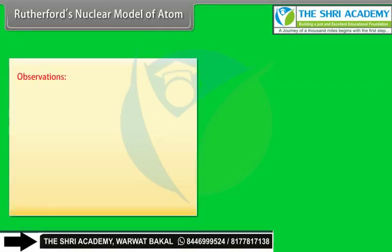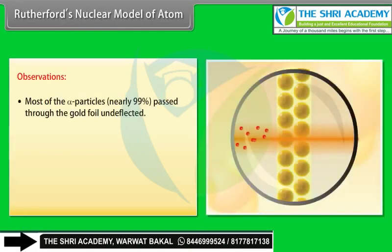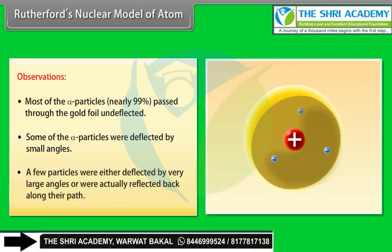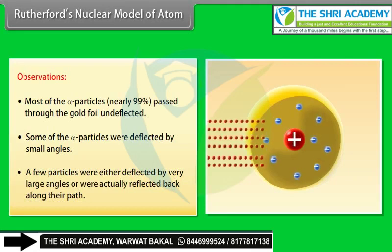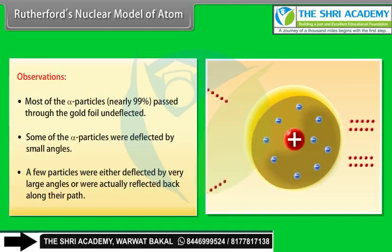Observations: (1) Most alpha particles — nearly 99% — passed through the gold foil undeflected. (2) Some alpha particles were deflected by small angles. (3) A few particles were deflected by very large angles or were actually reflected back along their path.